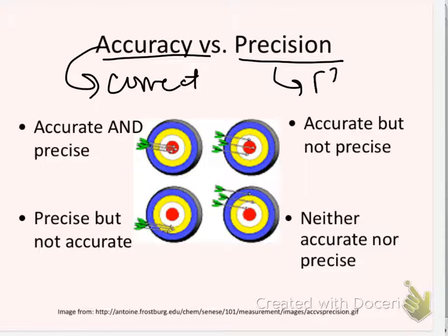Precision means replicable. We usually think of this in terms of a target. Being accurate is hitting the bullseye. Being precise is being able to cluster your shots. Our goal is to be both. If you are precise, do you know what the true value is? No. You aren't getting a picture of what the true value is — you're getting a picture of how good the instrument is.